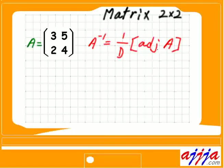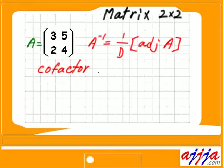Sometimes we call it adjugate, but to find out the adjoint, so we have three steps. Step number one, cofactor.